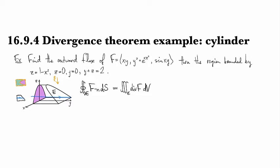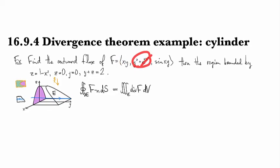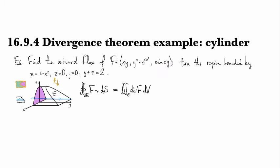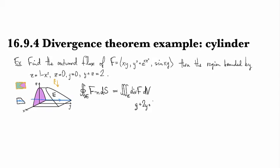So what is the divergence? The d/dx of the x-component is y, d/dy gives 2y because that nasty part is gone, and d/dz gives 0. So we have a very nice and simple divergence: y plus 2y plus 0 — that's 3y.